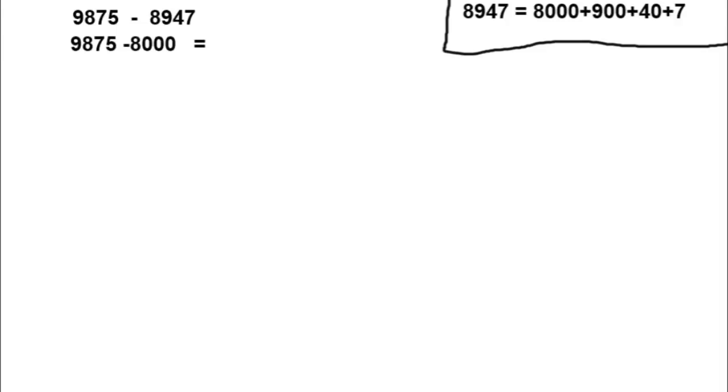Now 9875 minus 8000 — it is easy to find. That gives us 1875. Now 1875 minus 900 — this is also easy.